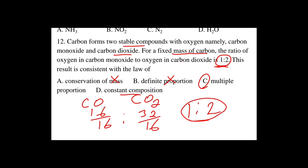The law of multiple proportions states that when two elements form more than one compound, the mass of one element that combines with a fixed mass of the other element is in a small whole-number ratio. So the correct answer is C, multiple proportion.